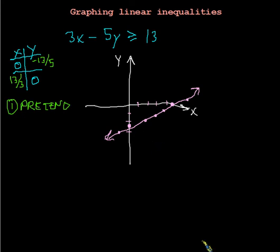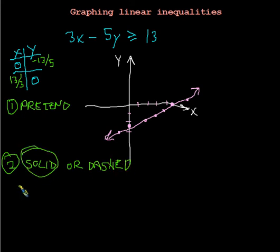So in step two of our procedure, actually two was solid or dashed, and we took care of that. In step three of our procedure, by the way, we decided we were going to go solid. Step three, we'll figure out where to shade. And when we go to do that, we will need to test a particular point, and in this case,